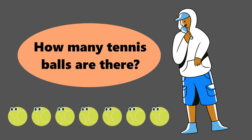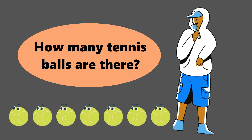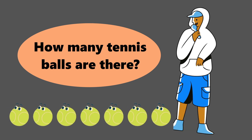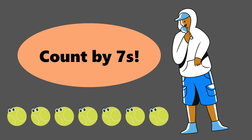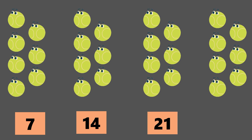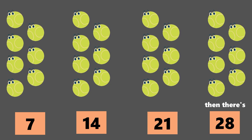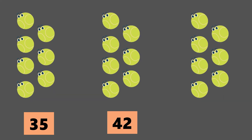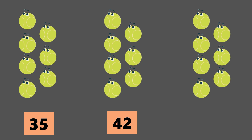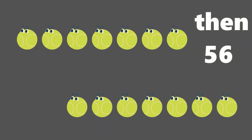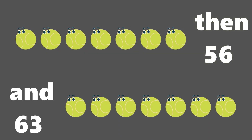How many tennis balls are there? Count by 7s: 7, 14, 21, then there's 28, 35, and 42, then there's 49, then 56 and 63.